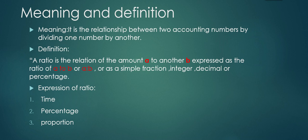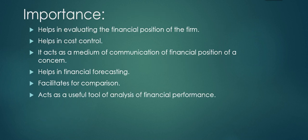The last form is proportion. In this form, the amounts of the two items are expressed in a common denominator. For example, when finding the current ratio, the relationship between current assets and current liabilities forms an ideal ratio of two is to one — which is in the form of proportion.